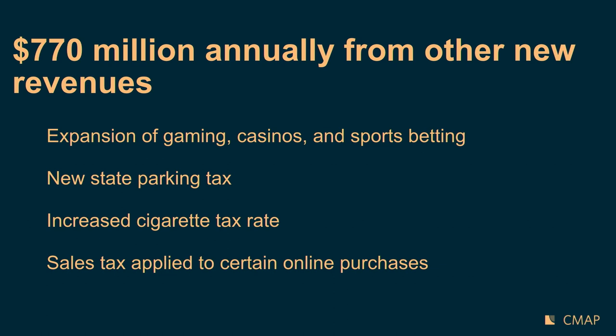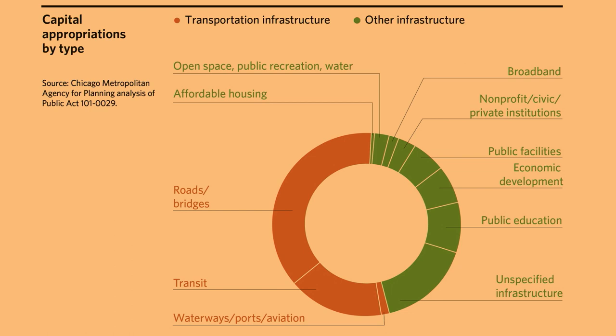There are also other new revenue sources in Rebuild Illinois to fund infrastructure: a significant expansion of gaming casinos, legalization of sports betting, a new state parking tax, an increase to the cigarette tax, and certain sales taxes now applied to online purchases. These types of revenues are much riskier than user fees — betting on new casinos involves citing considerations, and those revenues may not materialize on schedule. For more in-depth analysis and financial projections, I'd point you to the memos linked in the Google Doc.